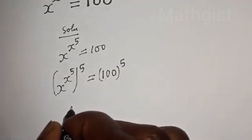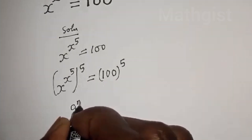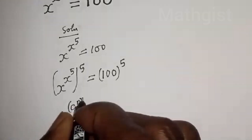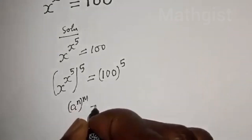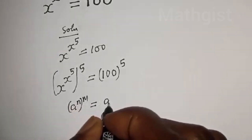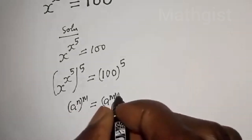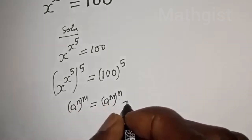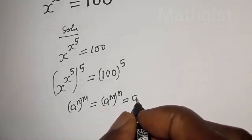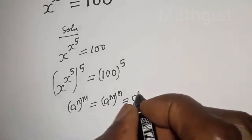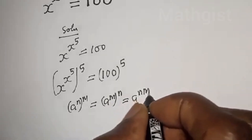Note: a raised to power n, to the power m, is equal to a raised to power m to the power of n. This is equal to a raised to power nm.